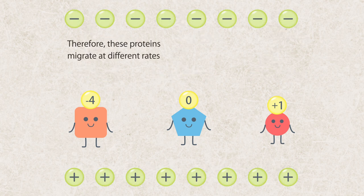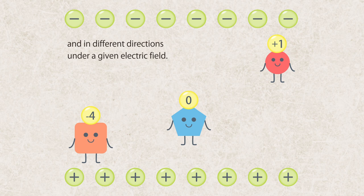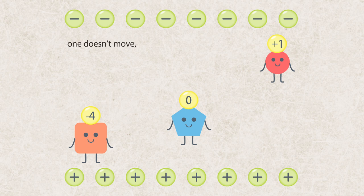Therefore, these proteins migrate at different rates and in different directions under a given electric field. One runs towards the anode, one doesn't move, and one migrates towards the cathode.